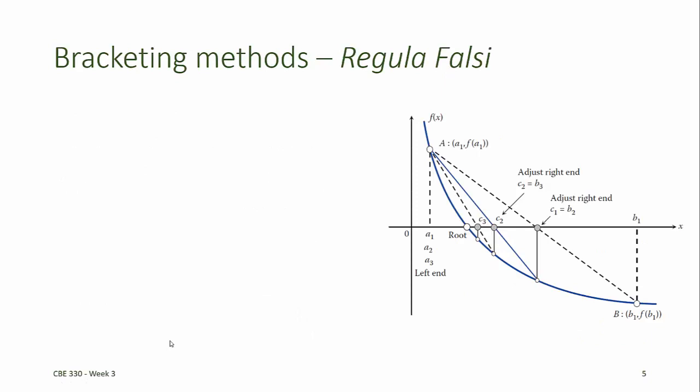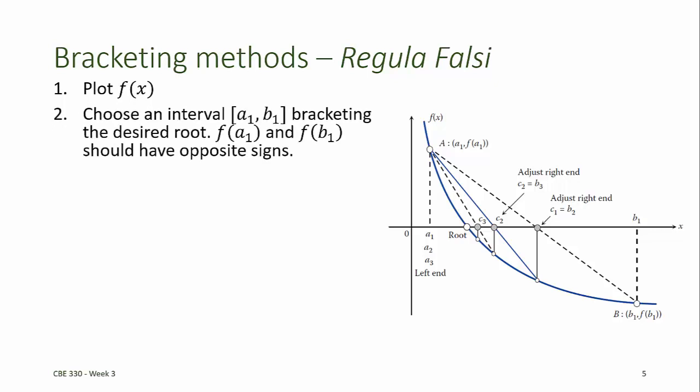The next bracketing method that we'll discuss is called the false point or regula falsi method. Again, we want to begin by plotting the function f of x, and then choosing an interval, we'll call this interval a1 and b1, bracketing the desired root.